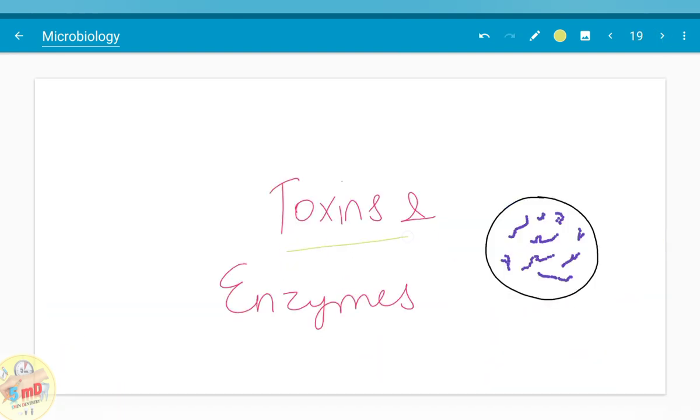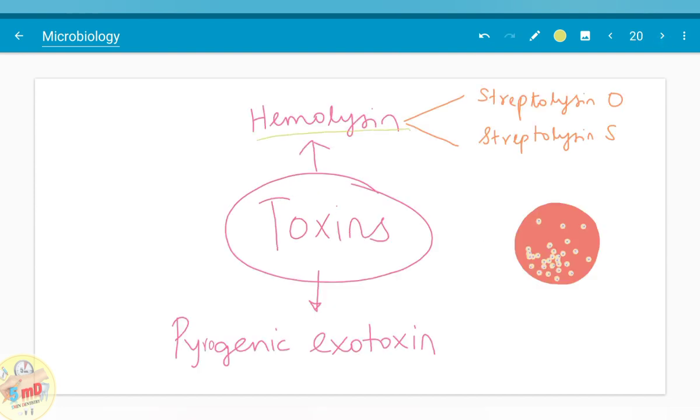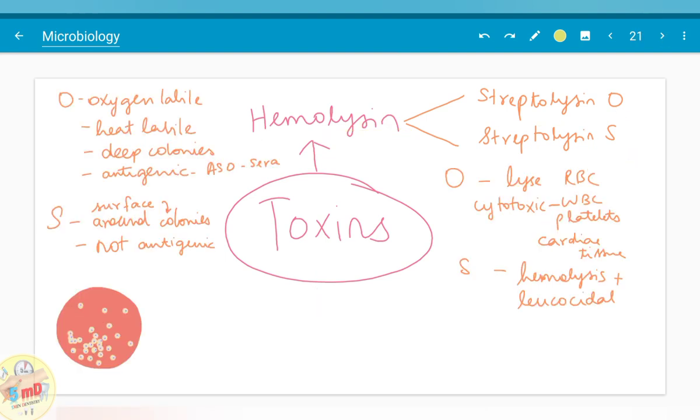Let us see about the toxins and enzymes of streptococcus. Toxins include hemolysin and pyrogenic exotoxin. Hemolysin again includes streptolysin O and S. Both are responsible for the beta hemolysis. Streptolysin O is oxygen labile whereas S is oxygen stable. Therefore O is present only in deep colonies and it is antigenic in nature. Antistreptolysin O is present in sera and the titer is very useful in laboratory diagnosis. It is heat labile also, whereas streptolysin S is not antigenic in nature. Apart from the property of hemolysis, O is also cytotoxic. It affects WBC, platelets, and cardiac tissue, whereas S is associated with hemolysis and leukocidal property.